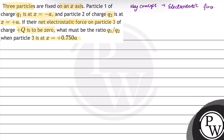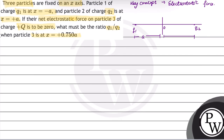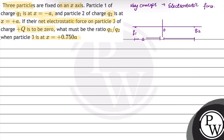In this question, 3 particles are in a line along the x-axis. Particle q1 is placed at a distance of minus a from the origin. Another particle of charge q2 is placed at a distance of positive a from the origin. Particle 3 is placed at a distance of 0.75a from the origin.